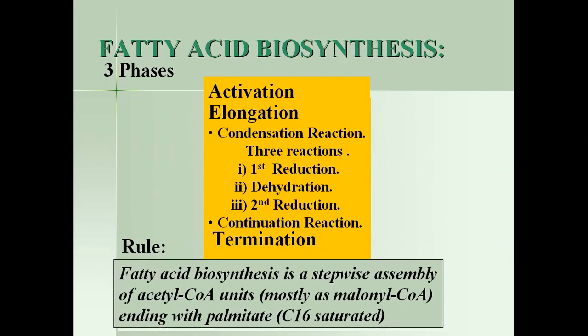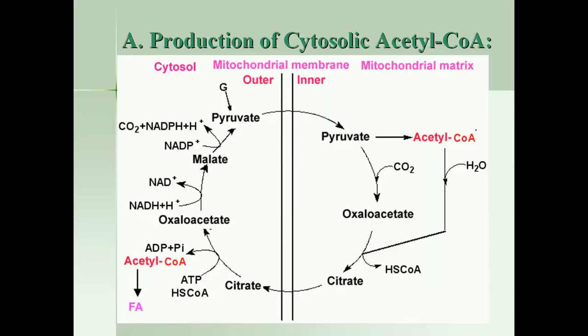Before we start fatty acid biosynthesis, we should note the steps of how fatty acid synthesis begins. Step A: Production of cytosolic acetyl-CoA. Acetyl-CoA is normally produced by the oxidation of fatty acids in the mitochondrial matrix. Fatty acids are oxidized in mitochondria but fatty acids are synthesized in the cytosol.